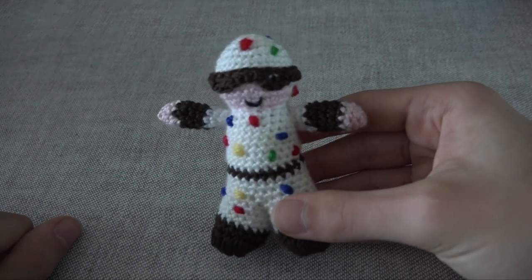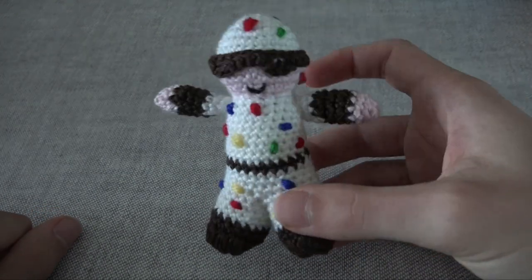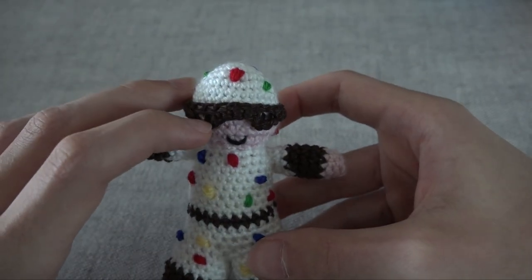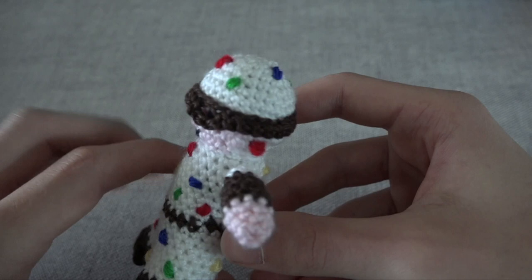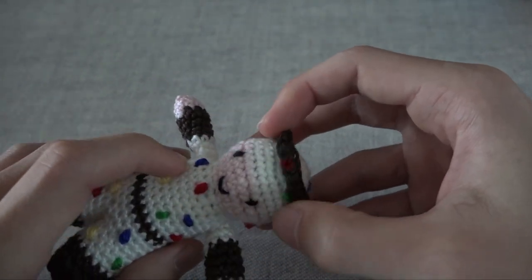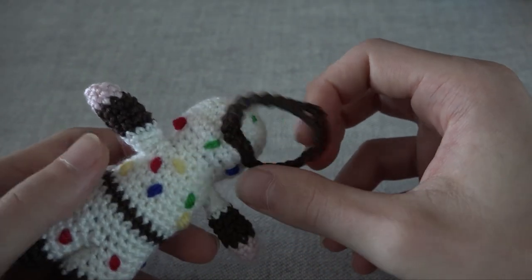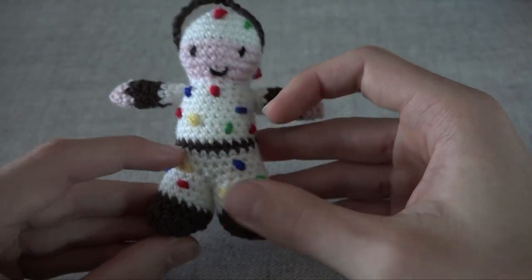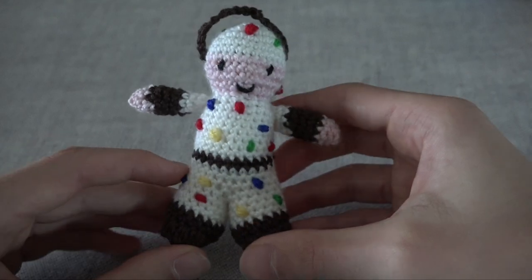Continuing my Suicide Squad obsession, I crocheted Polka Dot Man, who was really easy and really fun, and I think he looks great. Not a big fan of his visor, but it does the trick, and you can actually take it off. It's just sewed onto the back of his head. And I especially like all the little polka dots on his suit.